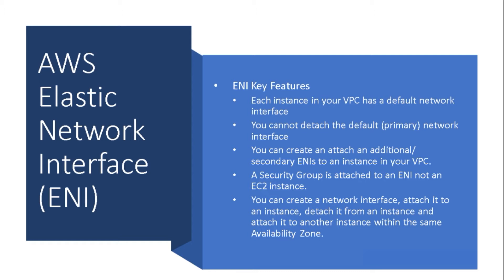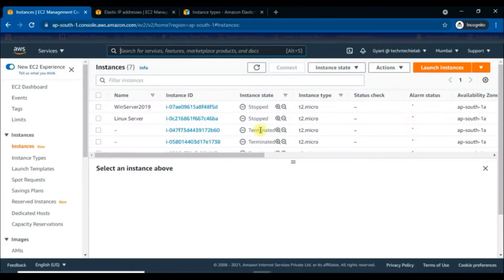You can create a network interface, attach it to an instance, detach it from an instance, and attach it to another instance within the same availability zone. When you move a network interface from one instance to another, network traffic is redirected to the new instance.